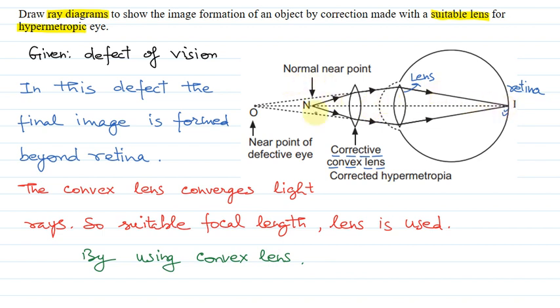Normal near point is defined, and near point of defective eye is also shown in the diagram.